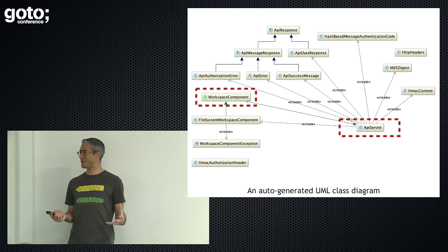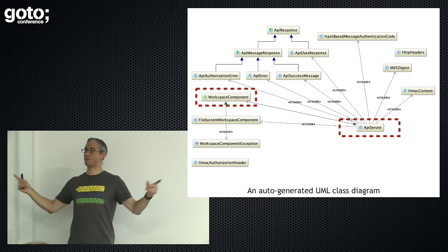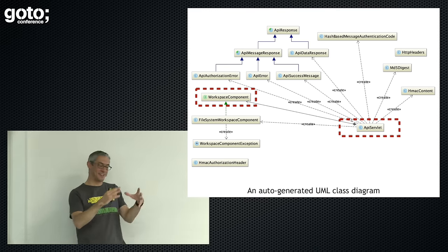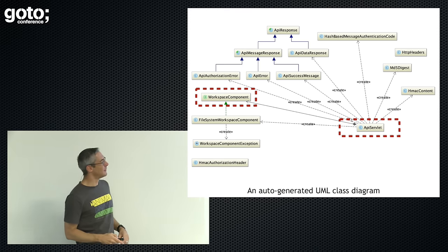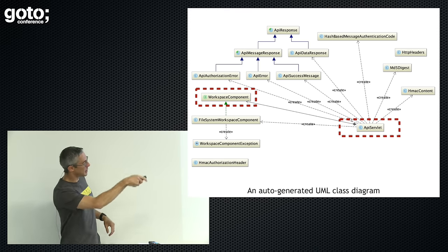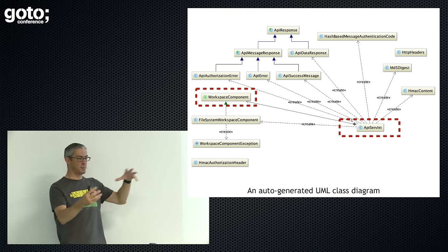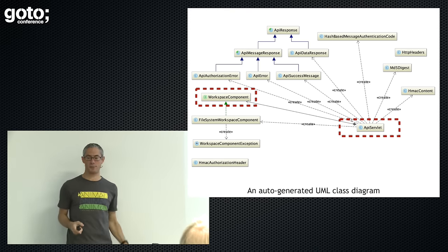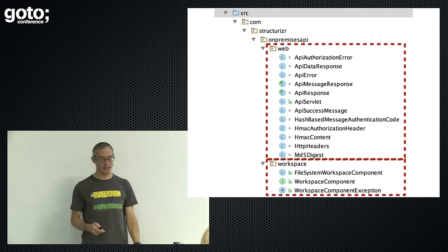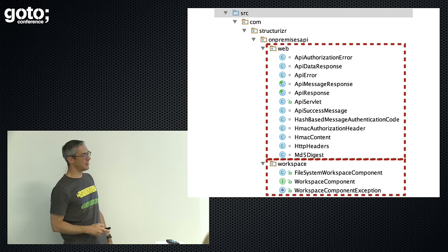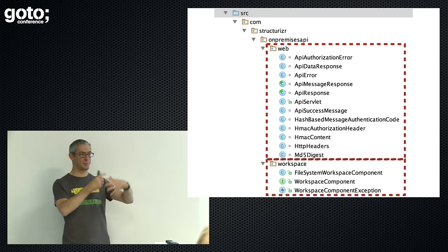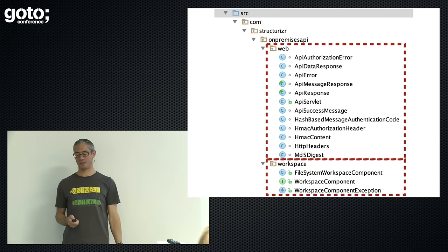In my little class diagram, these two highlighted boxes are what I consider to be the components in this little API app. There's a Java server handling API requests, and there's a workspace component dealing with Structurizer workspaces. This is 'frameworkless' — the simplest implementation you could possibly write. All of the other code things are just parts of those two components — two major components with a bunch of helper code.